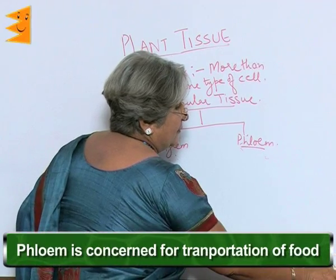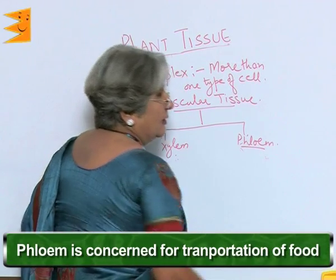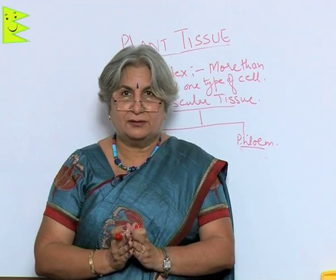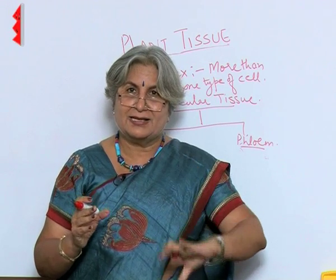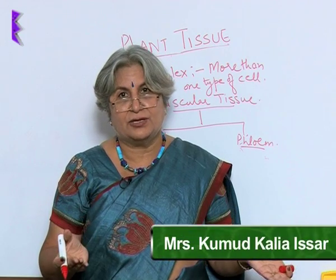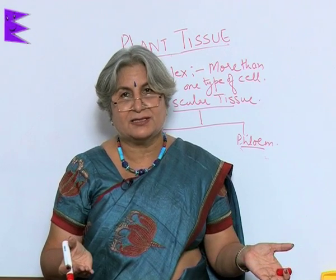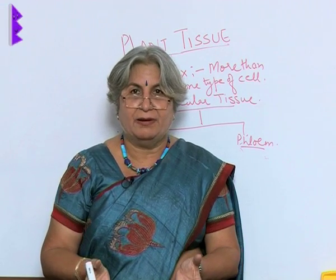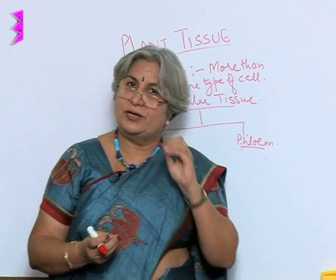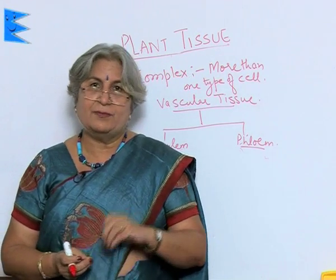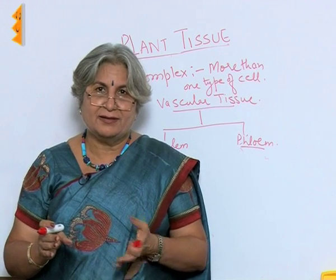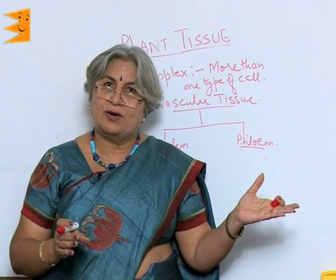The phloem is concerned with transportation of food. You know leaves make the food, just like in the digestive system food is digested, but then it has to be transported to all parts so that it can be burnt to release energy. Similarly, food is produced in the leaf with the help of chloroplasts, but it cannot remain there — it has to be transported to all parts.